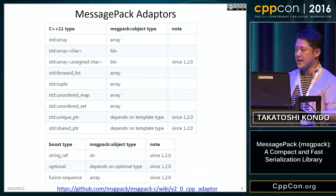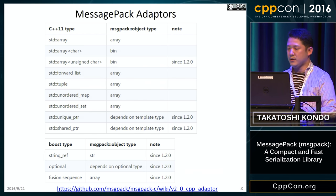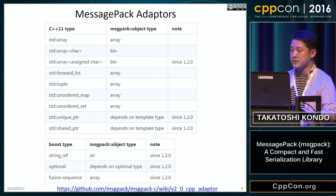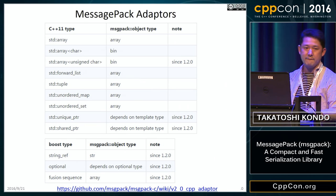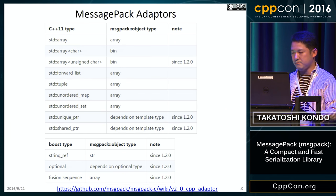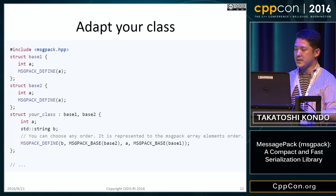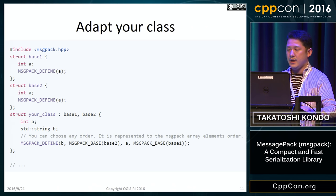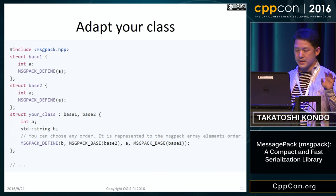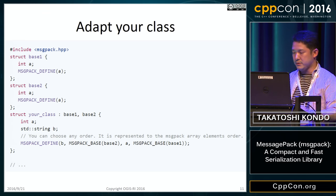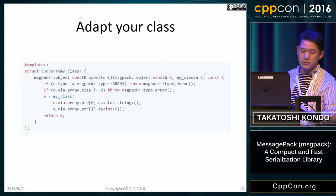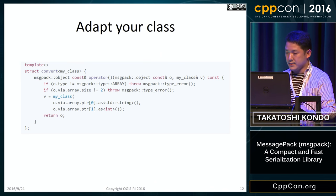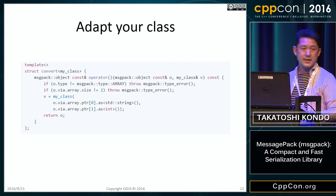MessagePack provides adapters for basic C++ types and containers, and some Boost types are supported, like Boost.Fusion. You can also adapt your own class to MessagePack. The example shows the intrusive approach, which uses a MessagePack-defined macro and requires the user class to be default constructible. MessagePack also provides a non-intrusive approach that supports non-default-constructible classes, where you define some specialized class templates.